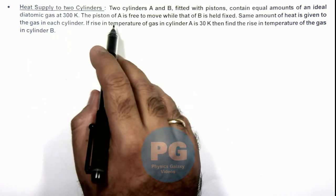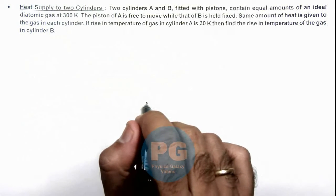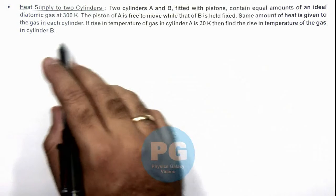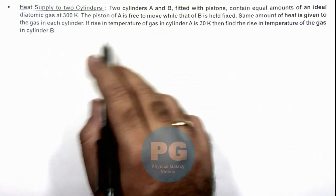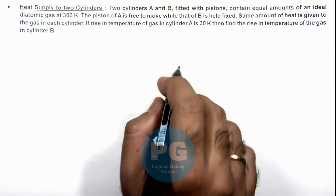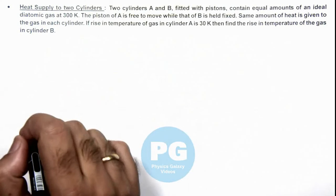Here the piston of cylinder A is free to move while that of B is held fixed, and the same amount of heat is given to the gas in each cylinder. If the rise in temperature of gas in cylinder A is 30 Kelvin, then we are required to find the rise in temperature of gas in cylinder B.